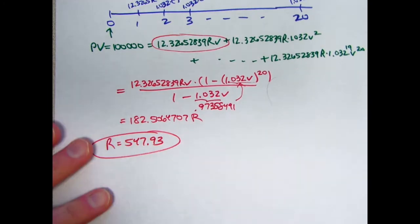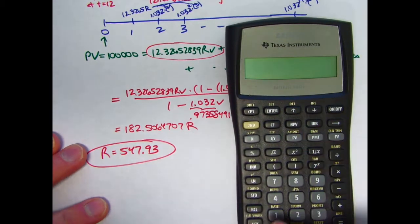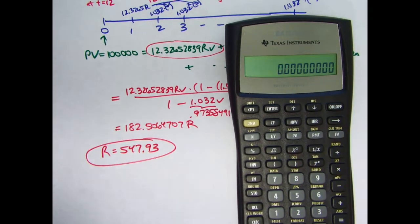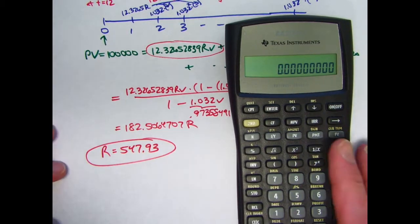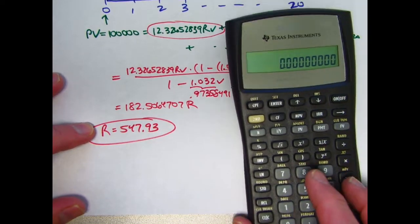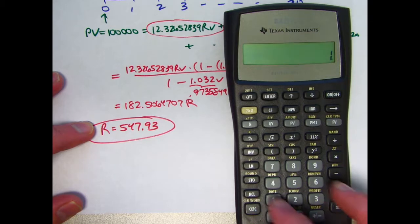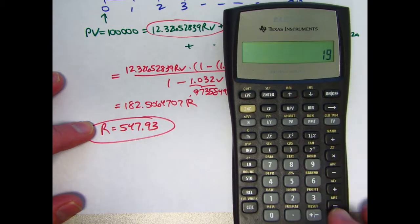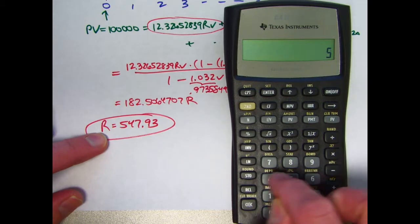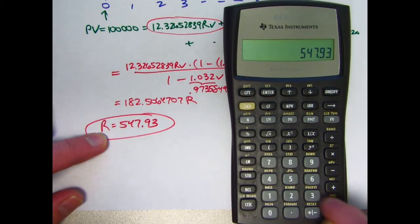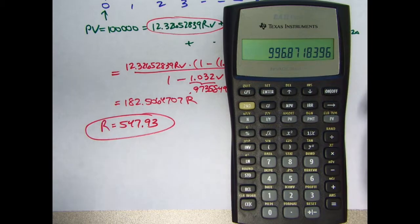We might also want to note that because of this, we could figure out, for example, what the executive is getting by the monthly payments for the last year. Again, 1.032 is the growth factor. If I take 1.032 to the 19th power times R times 547.93, by the 20th year, each month the executive is getting about $997. Of course, these are nominal dollars. Because of inflation, buying power is going down. In real terms, the executive is just breaking even, so to speak, if inflation truly follows the 3.2% per year.